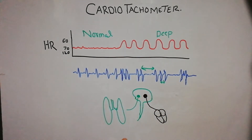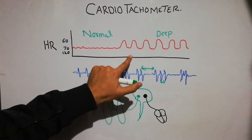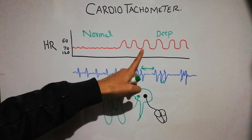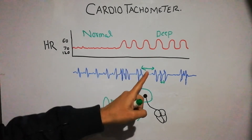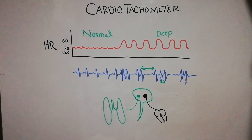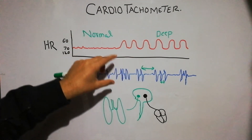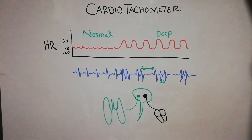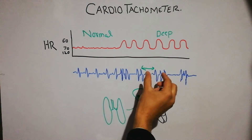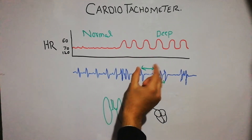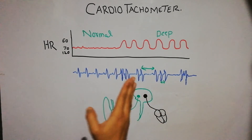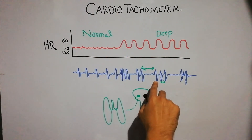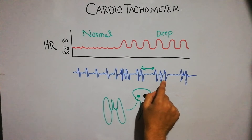But when a person is breathing deeply, the variation in the heart rate increases. The spike or height of this graph basically shows the duration of the QRS complexes — the more the height of this spike, the more the duration between successive QRS complexes. During deep breathing, the heart rate increases and decreases alternately, and the distance between QRS complexes keeps on increasing and decreasing. When the heart rate decreases, the distance between two QRS complexes increases and there is a spike on the cardio tachometer recording.